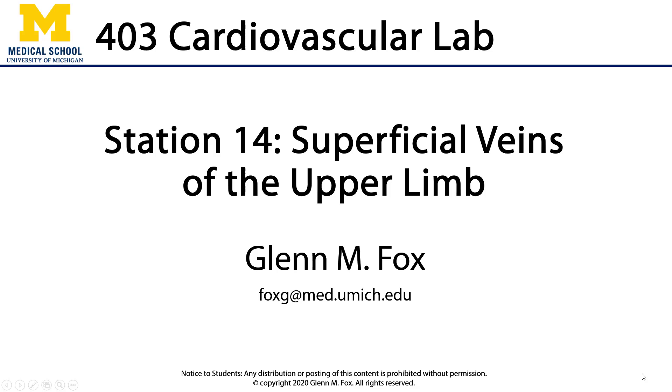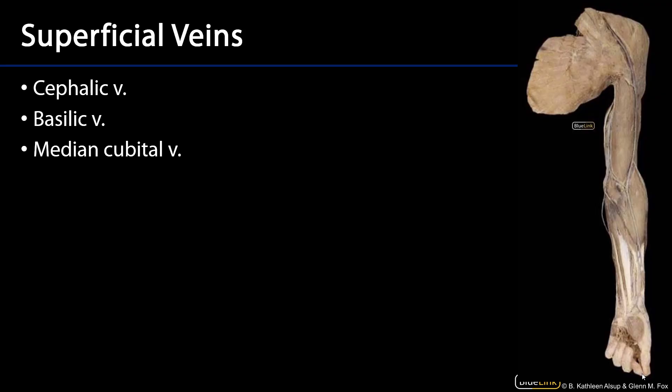Let's talk about the superficial veins of the upper limb. Recall that the superficial veins of the upper limb are the major veins of the upper limb, whereas the deep veins of the upper limb are venae comitantes of their associated named arteries.